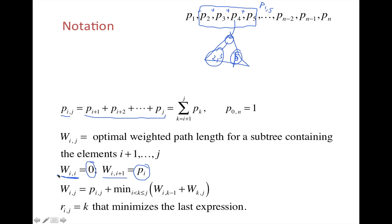Now this is probably the most important formula in this short video. It basically defines what would be the optimal weighted path length for set ij.